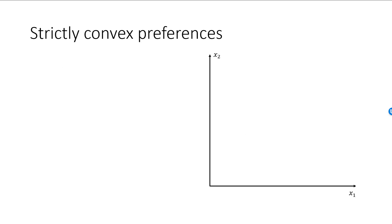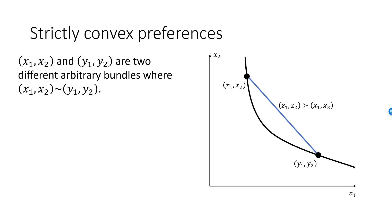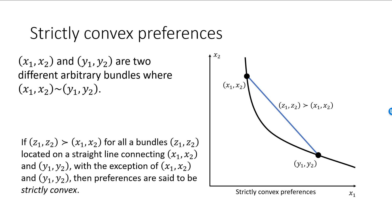Let's define the concept of strictly convex preferences. Here is an indifference curve consistent with strictly convex preferences. We have two arbitrary bundles, the X bundle and the Y bundle, on the indifference curve, and we draw a straight line between them. If every bundle on this blue straight line, except for the X and Y bundles themselves, is strictly preferred to any bundle on the indifference curve, and this is true no matter how the initial bundles are selected and which indifference curve we choose, then preferences are said to be strictly convex.